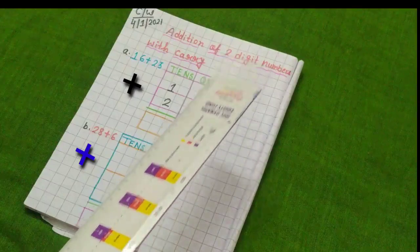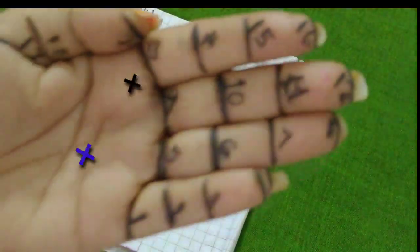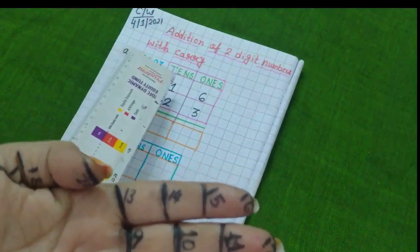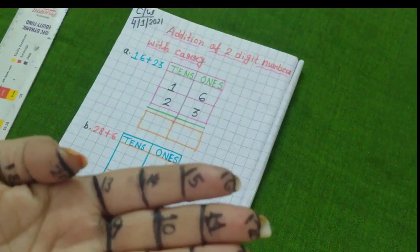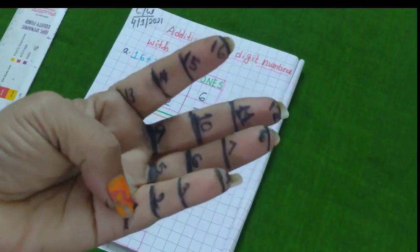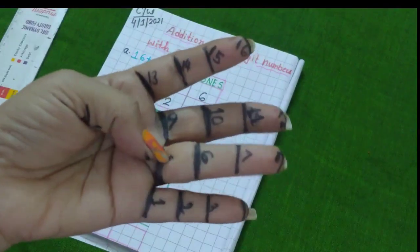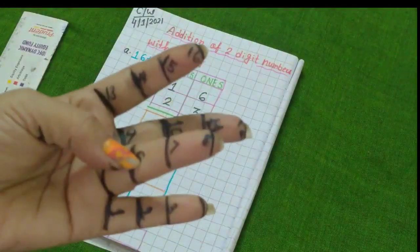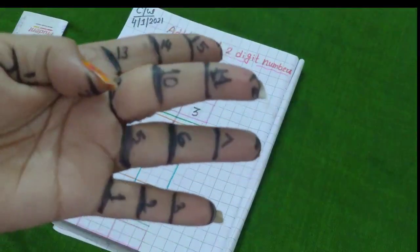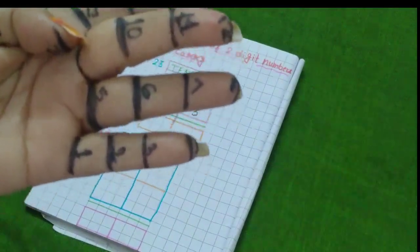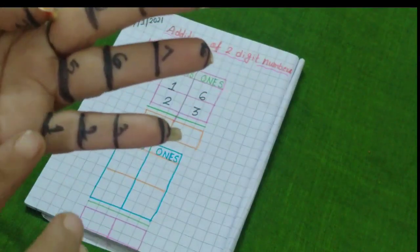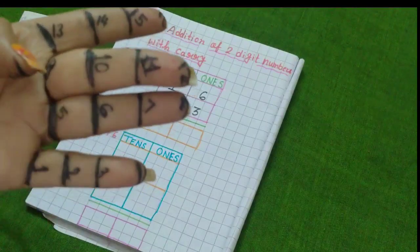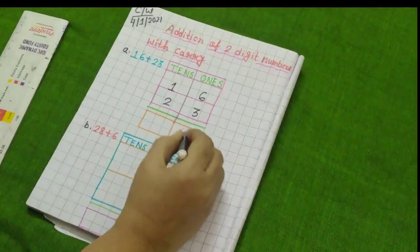So, first I have to add 6 and 3. Just see, I have written finger marks. So, first what we will do? We will add 6 and 3. So, first I am counting 6 finger marks. Just see. 1, 2, 3, 4, 5 and 6. And then after 6, I have to count 3 more finger marks. So, 1, 2 and 3. So, how many finger marks have I reached? Let's count. 1, 2, 3, 4, 5, 6, 7, 8, 9. Understood?